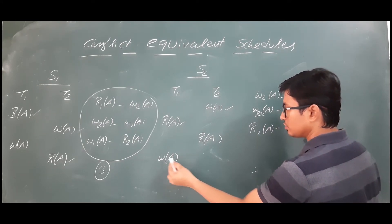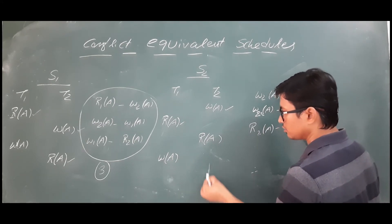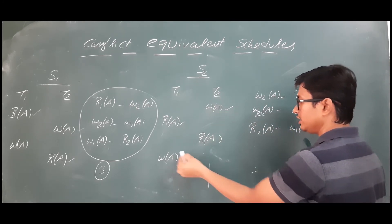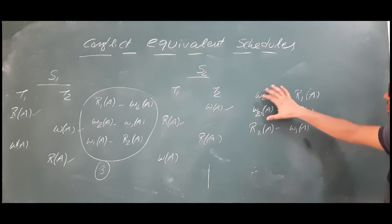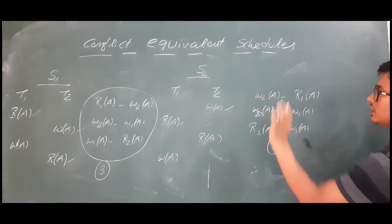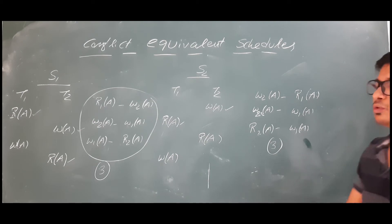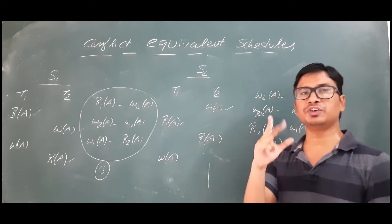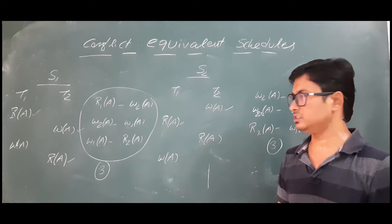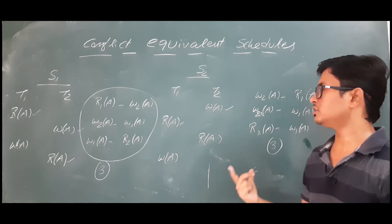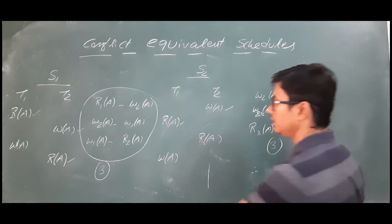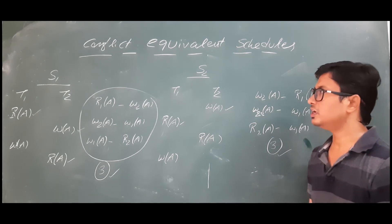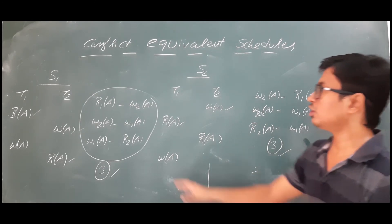We found three conflict operations for schedule S2 also. So when can I say that two schedules are conflict equivalent? It should satisfy two conditions. The first condition is that the number of conflict operations in both the schedules should be the same. Here you have three and here also it is three, so the first condition is satisfied.